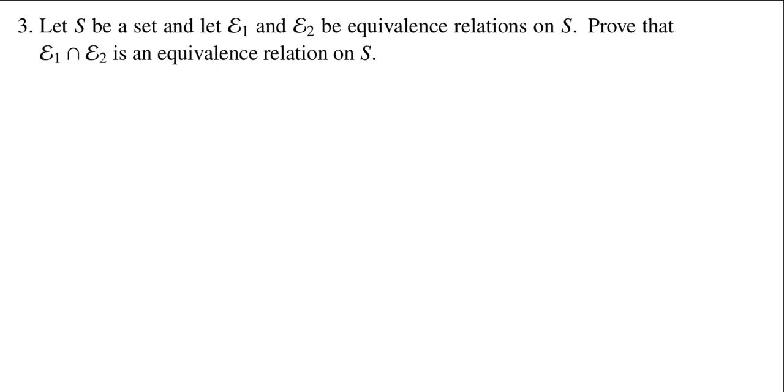In this problem, we are given a set S, and we're assuming there are two equivalence relations, denoted E1 and E2, on the set S. We want to prove that the intersection of those two equivalence relations is again an equivalence relation.